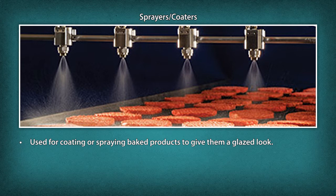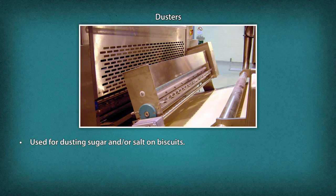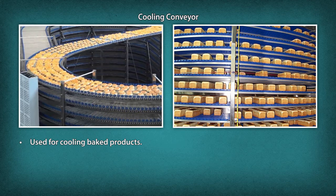Dusters: They are used for dusting sugar and/or salt on biscuits. Cooling Conveyor: It is used for cooling baked products. Packing Machinery: It is used for packaging finished products.